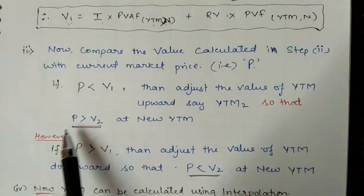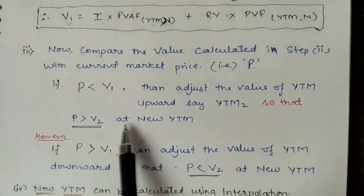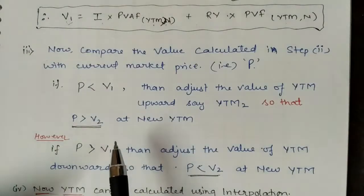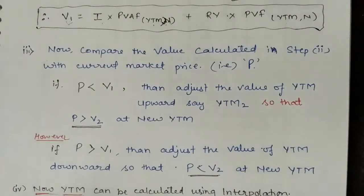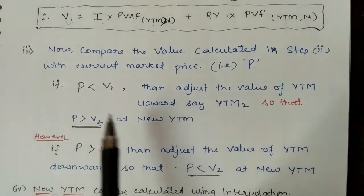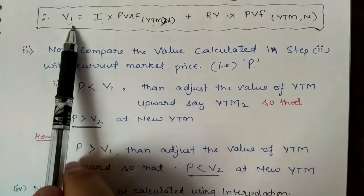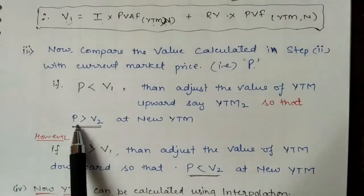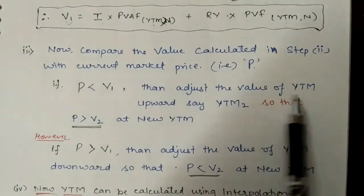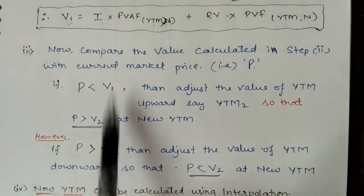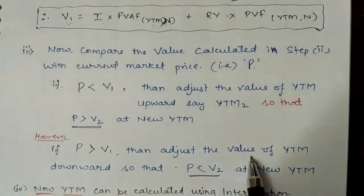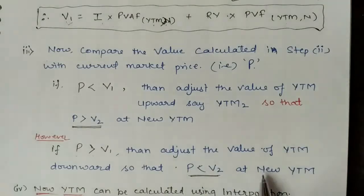If the current market price is less than V1, adjust YTM upward to a new YTM2 so that the current market price becomes greater than V2. This is because at a higher rate of return, the present value of inflows is lower — same as in IRR. If the current market price is greater than V1, then adjust YTM downward so that the current market price becomes less than V2 at the new lower YTM.